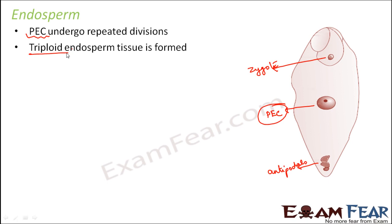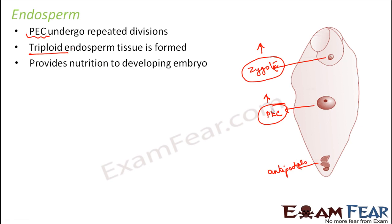The development of the endosperm always happens before the development of the embryo, because the zygote will also develop into embryo, but the development of the PEC occurs before the development of embryo. Why? Because endosperm is the one which will provide nourishment to the embryo. Unless and until the nourishment is ready, there is no point in developing the embryo, because the embryo needs nourishment in order to grow. So first of all the endosperm has to be formed — it provides nutrition to the developing embryo, and that is the main purpose of the endosperm.